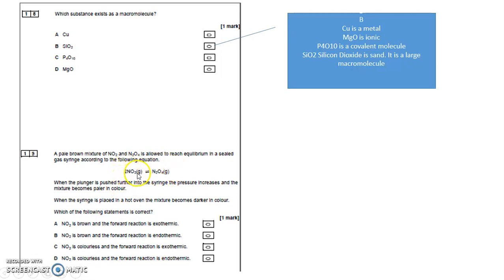N2O4 is pale and NO2 is brown. Yes, that's correct. NO2 is brown, this is pale. So the answer is between A and B.